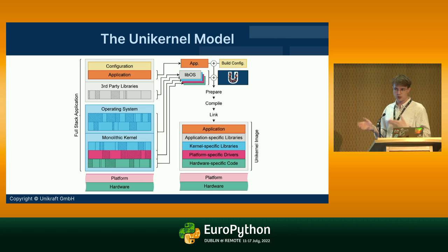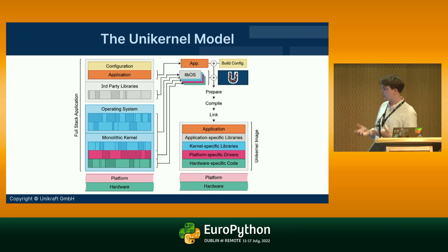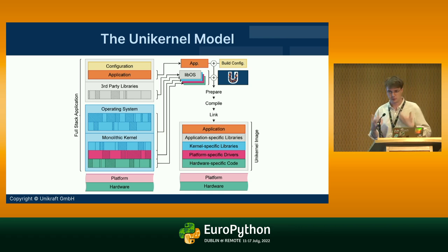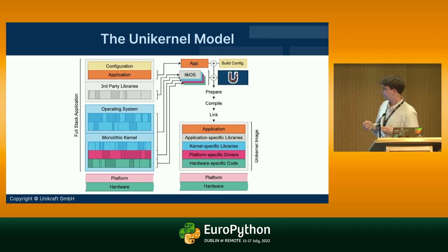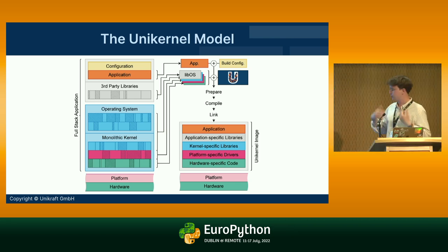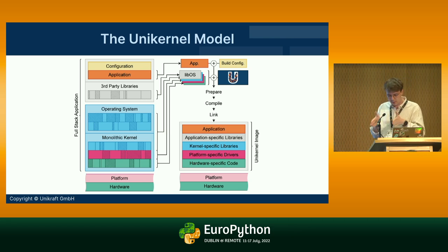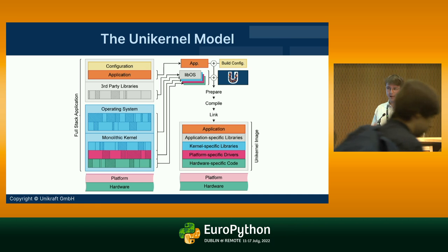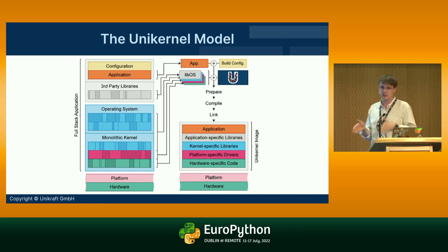A unikernel is a bespoke image — in the cloud context, a virtual machine — though you can also deploy it at the edge, for example on a Raspberry Pi, where it would only ever do that one thing. It only has the application-specific libraries and kernel-specific libraries. It's targeted directly for that platform and has only the code necessary to run on that particular piece of hardware.